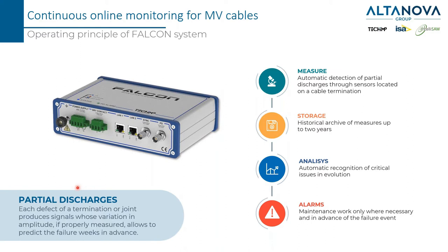Falcon is a device that measures the partial discharge activities of the cable itself. The medium voltage cable is made of several pieces connected together — this connection is called a joint — and the joint is the most critical part of the medium voltage cable, so the highest probability of a failure is inside one of these joints. Whenever there is a defect, it produces a little spark, which is in the end a partial discharge — an electrical signal in the range of very high frequency, in the megahertz range, that travels along the cable and reaches the sensor.